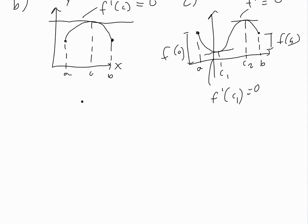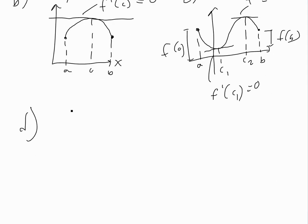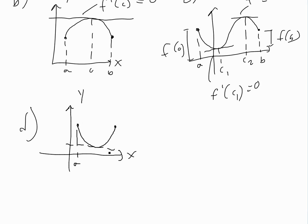The last case is a downward parabola between a and b. As you can see, there is a value c at the top where the derivative is equal to zero. So it should all be true.